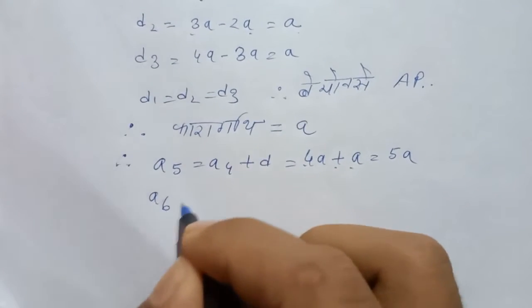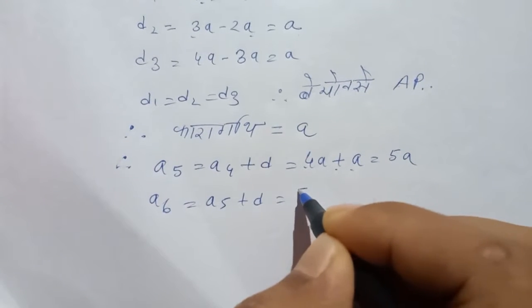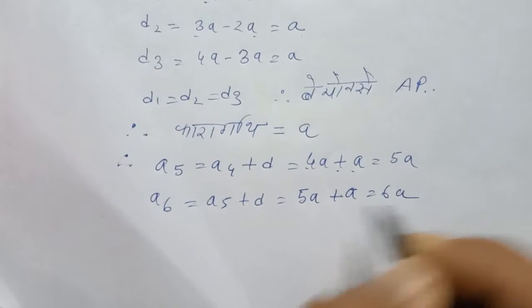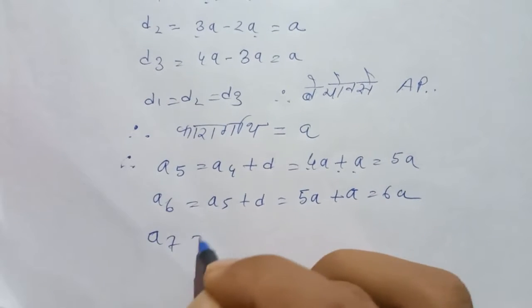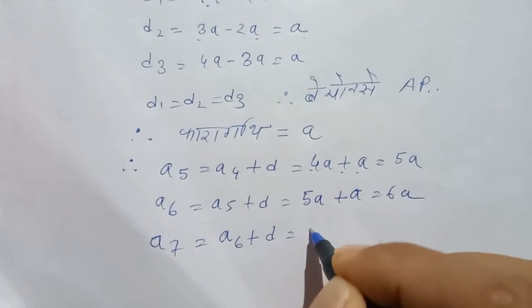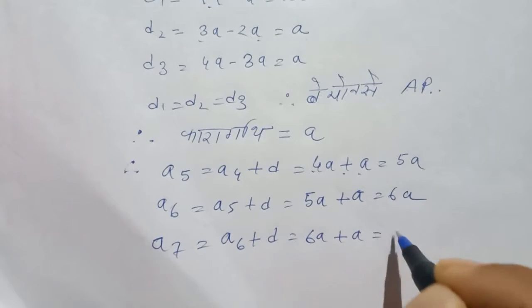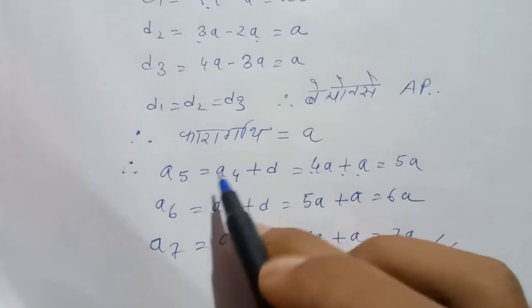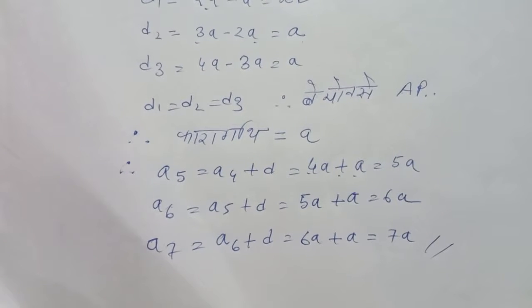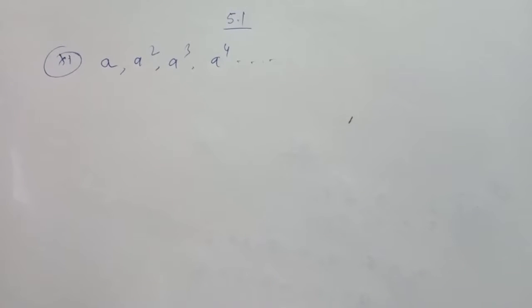A6 equals A5 plus D. A7 equals A6 plus D. So 6A plus A equals 7A. The next question involves A, A squared, A cubed, A4, A5, A6.